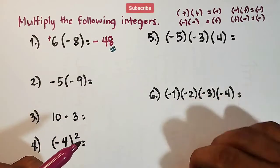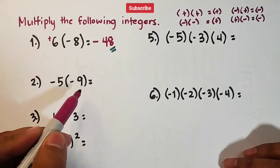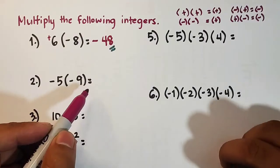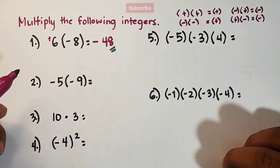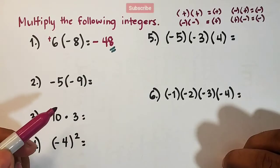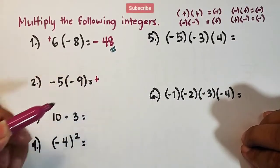Now, let's move on with item number two. For number two, we are given negative 5 times negative 9. As you can see, negative and negative, same sign. So, the answer is positive. If your answer is positive, no need to write the positive sign.